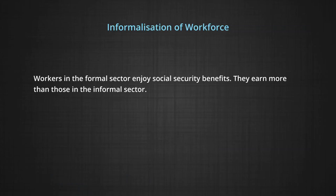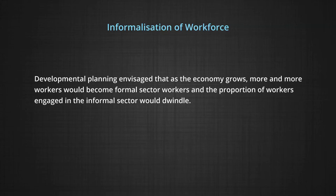All other enterprises and workers working in these enterprises form the informal sector. The informal sector includes millions of farmers, agricultural workers, owners of small enterprises, and people in those enterprises. It also includes self-employed persons who do not have any hired workers, and all non-farm casual wage laborers who work for more than one employer, such as construction workers and head-load workers. Workers in the formal sector enjoy social security benefits and earn more than those in the informal sector. Development planning envisaged that as the economy grows, more and more workers would become formal sector workers, so that social security is extended to them and the proportion of workers in the informal sector would come down with the passage of time.